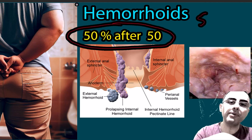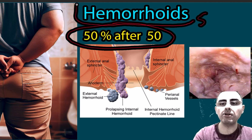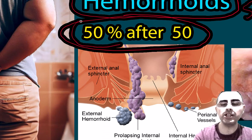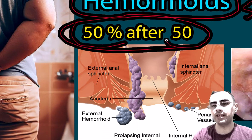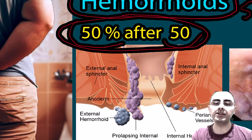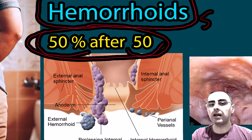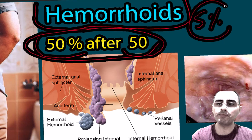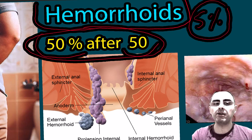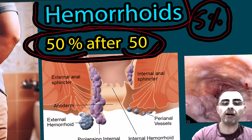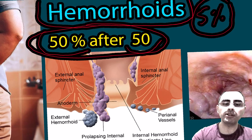Hemorrhoids is a very prevalent and common condition. It affects around 50% of the population after age 50, meaning the risk of hemorrhoids dramatically increases with age. Hemorrhoids typically affects around 5% of the general population, but there is social stigma about hemorrhoids, which is why in many cases people are shy about talking about it.